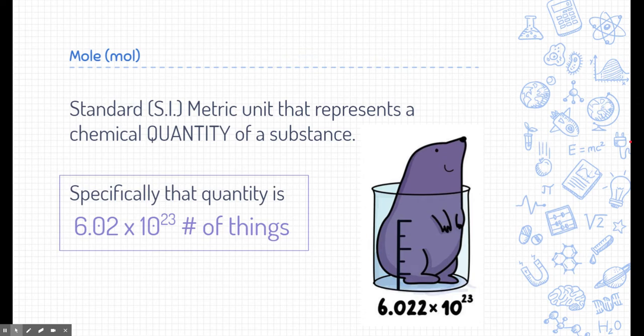So let's start off with the term mole. A mole is a standard metric unit — SI just means standard international metric unit — that represents a chemical quantity of a substance. This is a quantity, it's a unit, and we designate that unit with the abbreviation MOL. Whenever we have a number and the word MOL next to it, that means it's a quantity.